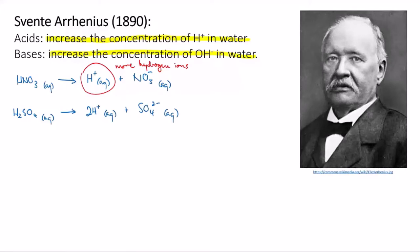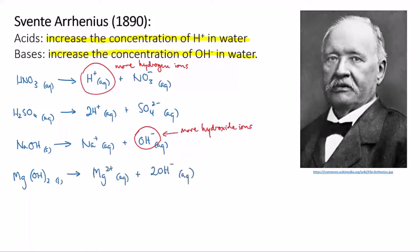A similar thing happens for sulfuric acid, but here each molecule has the potential to release two hydrogen ions. In contrast, a base is something like sodium hydroxide. This really is an ionic substance. It's made of a metal ion and a non-metal ion. And when it dissolves in water, it releases a sodium ion and a hydroxide ion. So dissolving this compound in water does increase the concentration of hydroxide ions in water. And similarly for magnesium hydroxide, which releases two hydroxide ions.